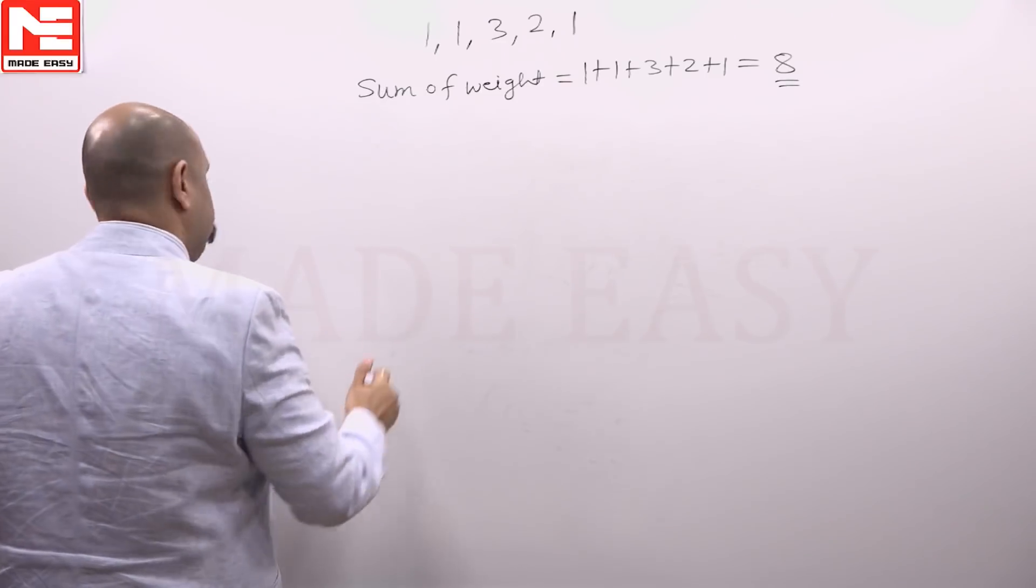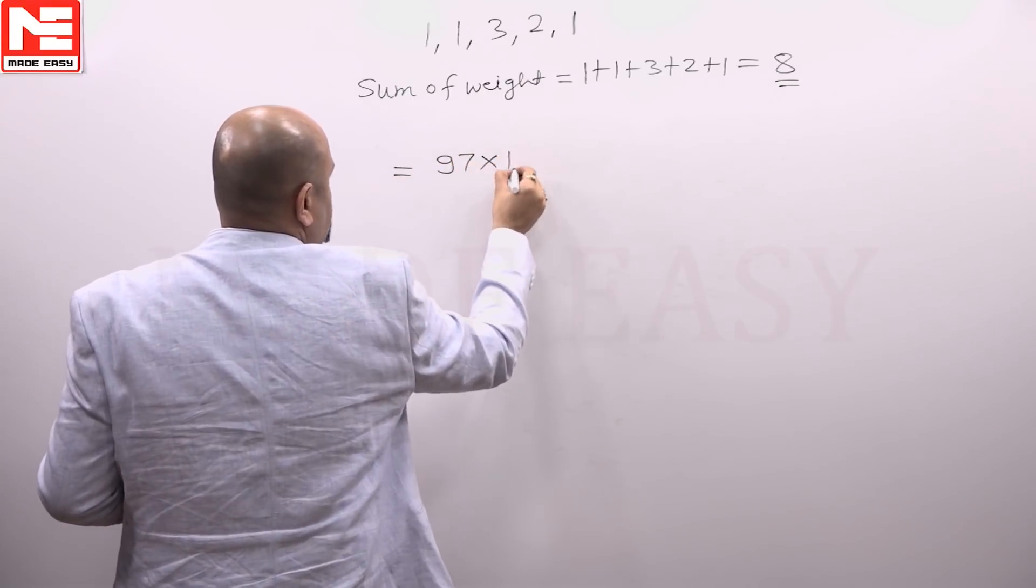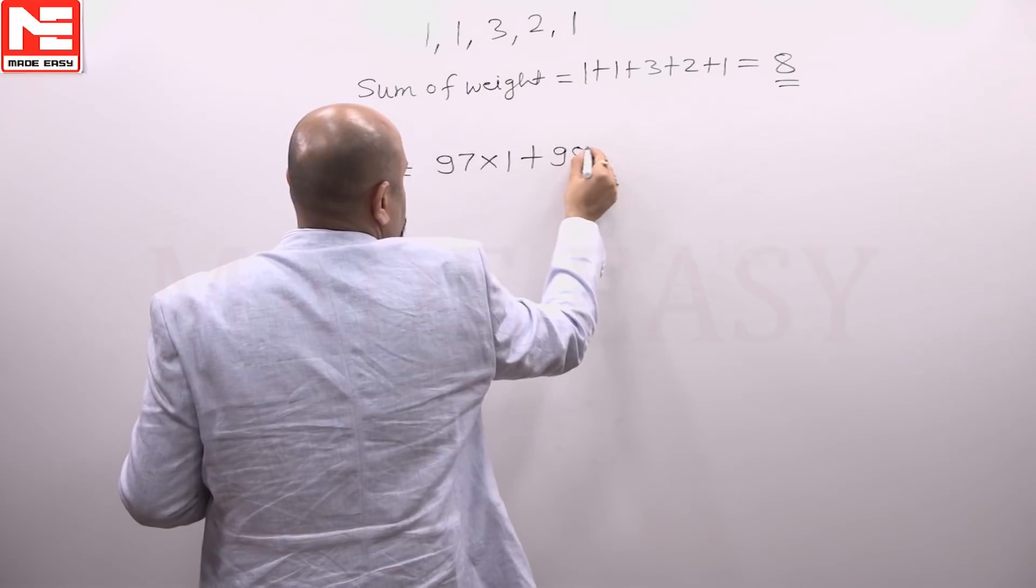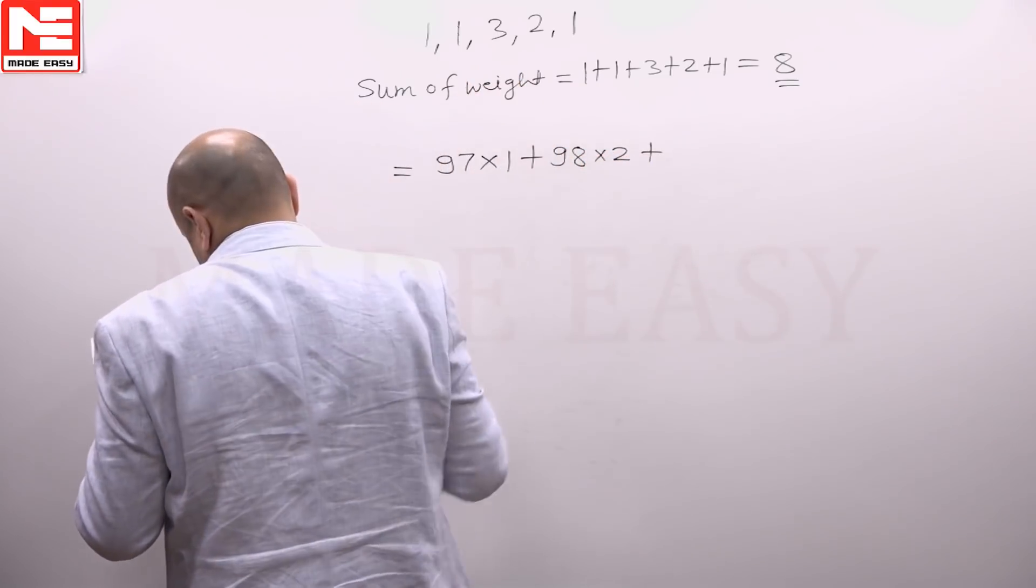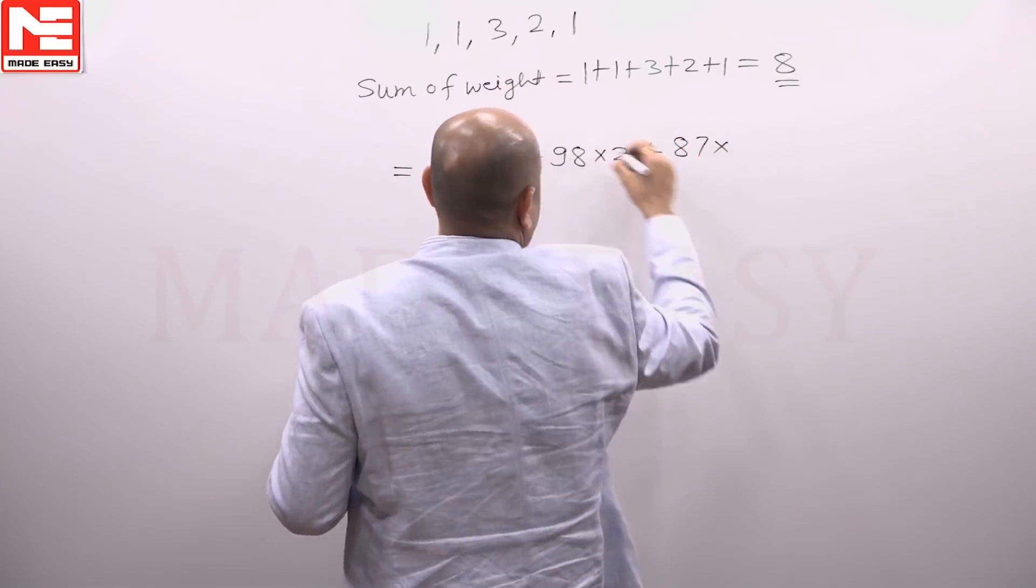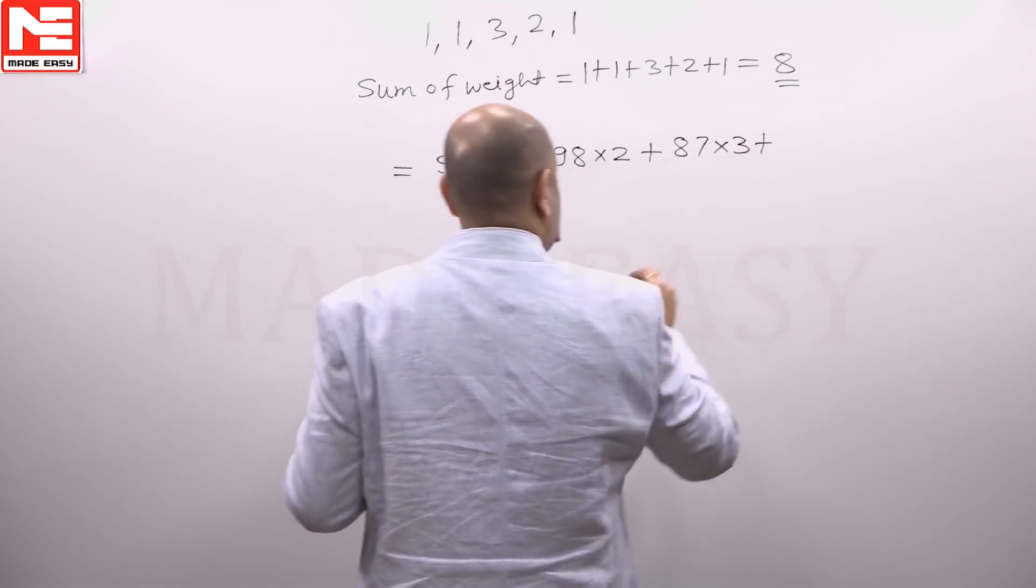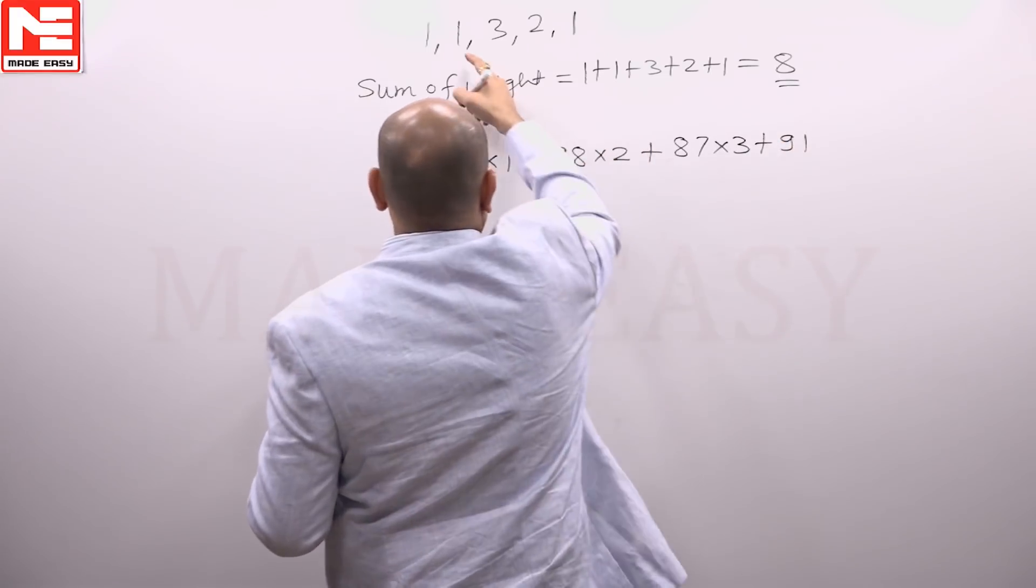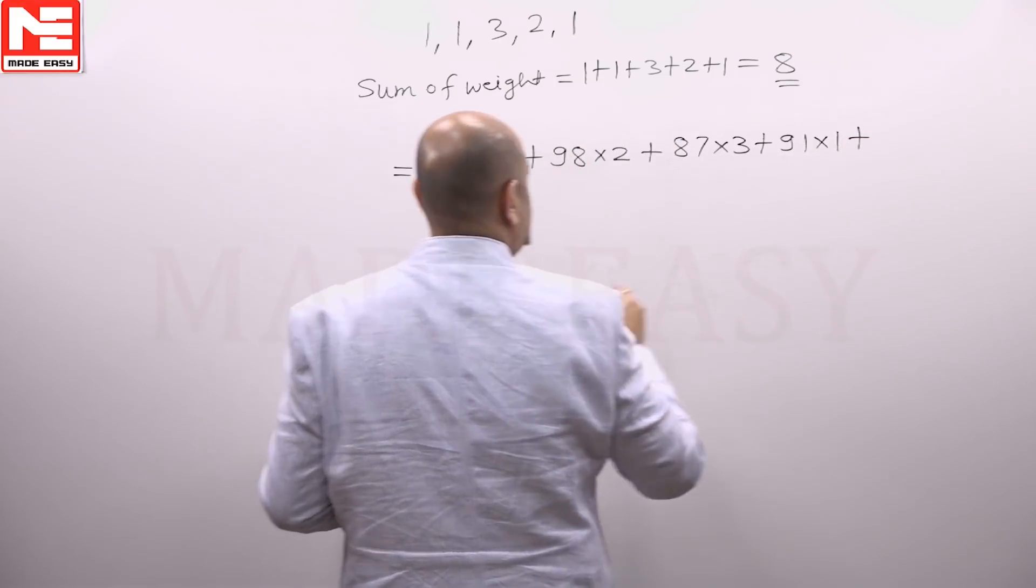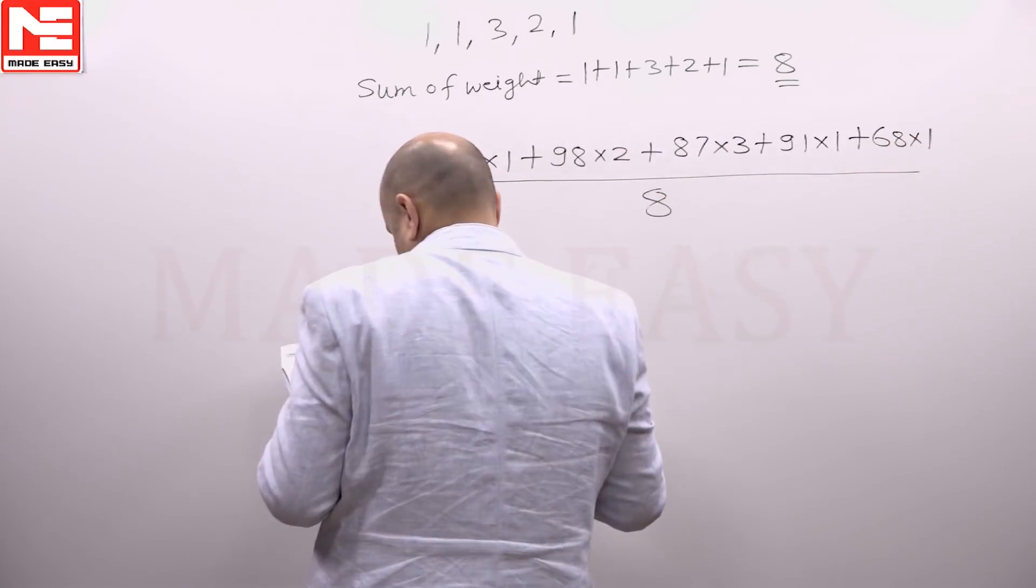Now the weights will be: most recent data, that is for the 10th period, the weight is 1, plus for the 9th period 98 into 2, plus for the 8th period 87 into 3, plus for the 7th period 91 into 1, plus for the 6th period 68 into 1, divided by 8.